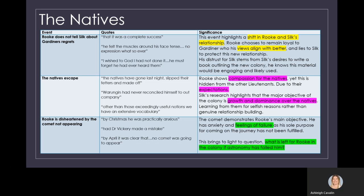The natives escape. The captured natives escape. Rook shows compassion for these natives. Yet, he must hide this from the other lieutenants, due to the expectation. Silk's research highlights that the major objective of the colony is growth and dominance over the natives. Silk had been allowed to study the natives while they were captured. However, his learning is about selfish reasons, rather than genuine relationship building. It's just material for his novel.